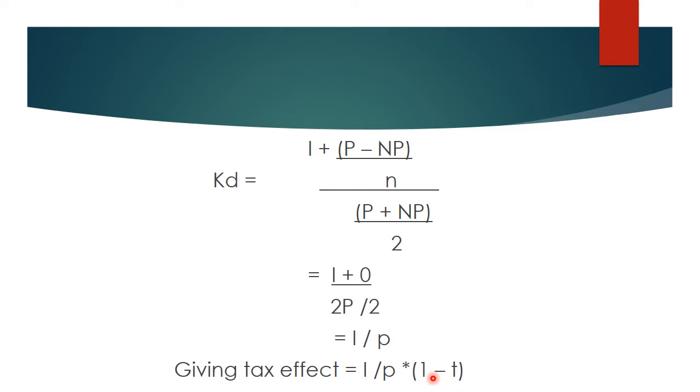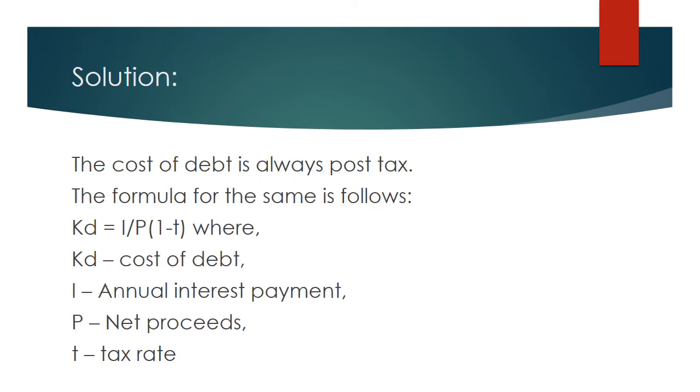See, whenever you have to give the tax rate, what you just have to do is, you just deduct the rate of tax from 1. That means, in this case, it is 40%. So, it would be 1 minus 0.40 and it is multiplied to the cost of debt. The answer you get is the absolute cost of debt even after giving the tax effect. So, with this formula, the cost of debt is always post-tax that we know. So, the formula for the same is as follows: Cost of debt is interest upon P into (1 minus T), where KD is the cost of debt, I is annual interest payment, P is the net proceeds, and T is the tax rate.